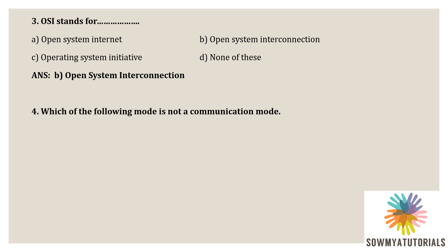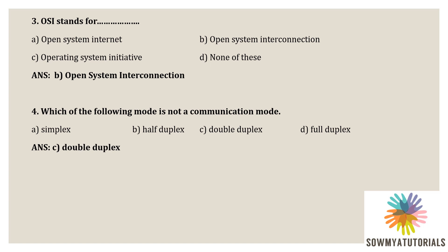Next question: which of the following mode is not a communication mode? Options are option A - simplex, option B - half duplex, option C - double duplex, option D - full duplex. The correct option is double duplex. It is not a communication mode. The communication mode is broadly classified into three different types: simplex mode, half duplex mode, and full duplex mode.